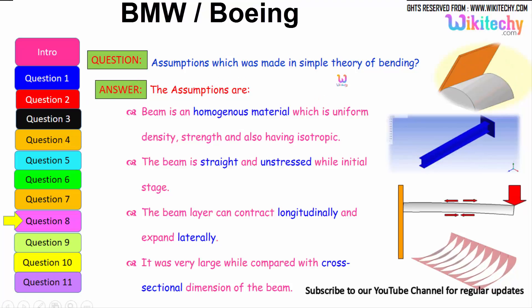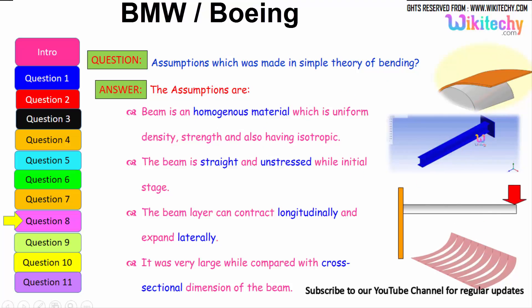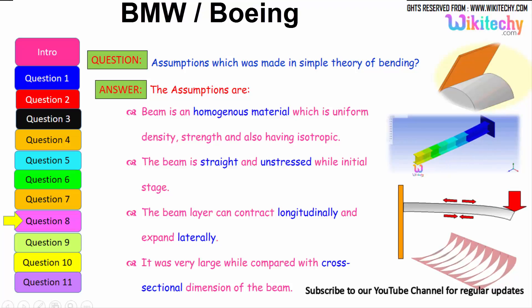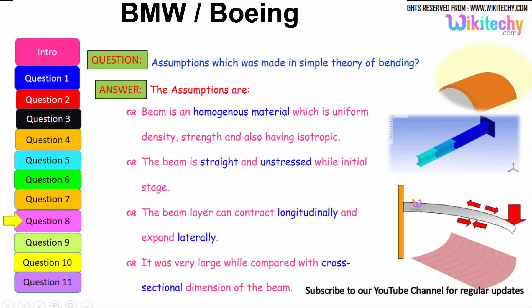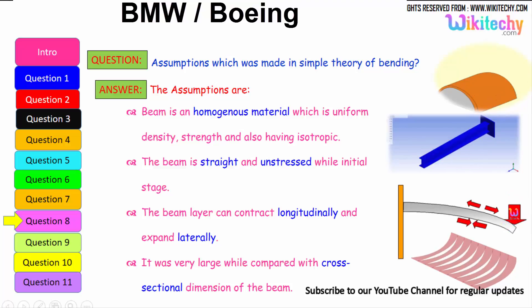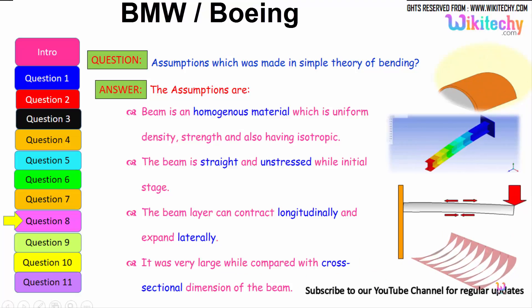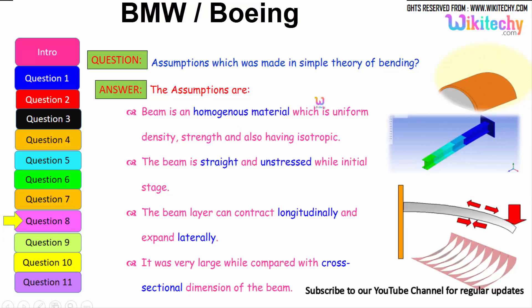What are the assumptions made in the simple theory of bending? The beam is a homogeneous material with uniform density, uniform strength, and is isotropic. The beam is straight and unstressed in its initial state. The beam can contract longitudinally and expand laterally. The length of the beam is very large compared with its cross-sectional dimension. These are the key assumptions for the theory of bending.